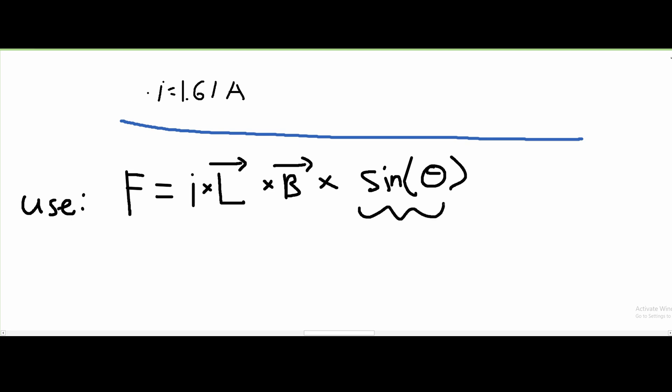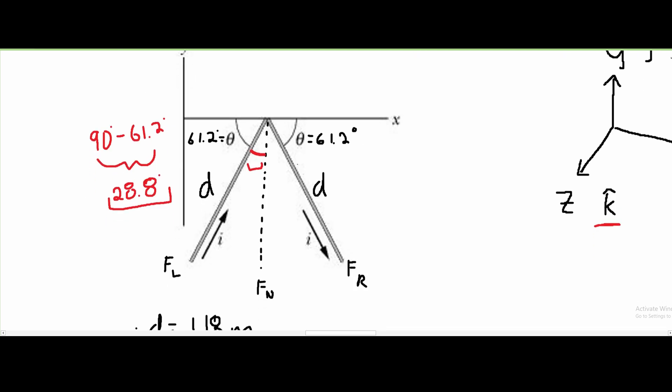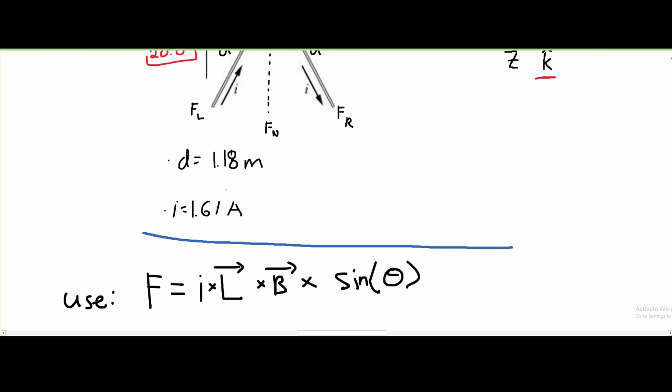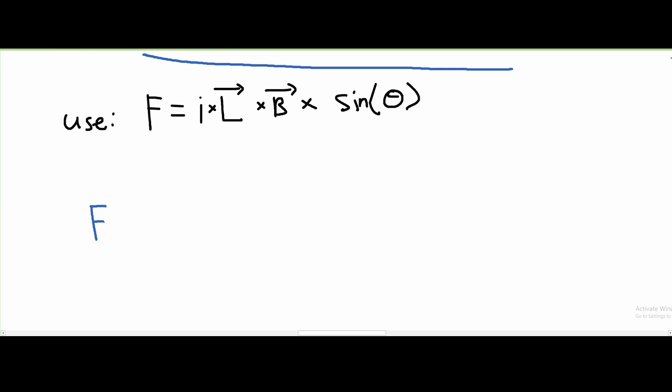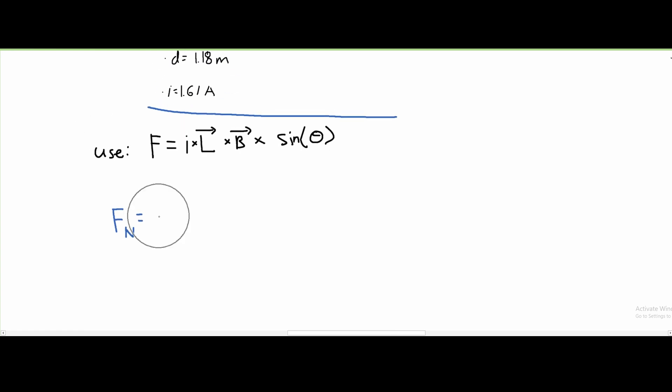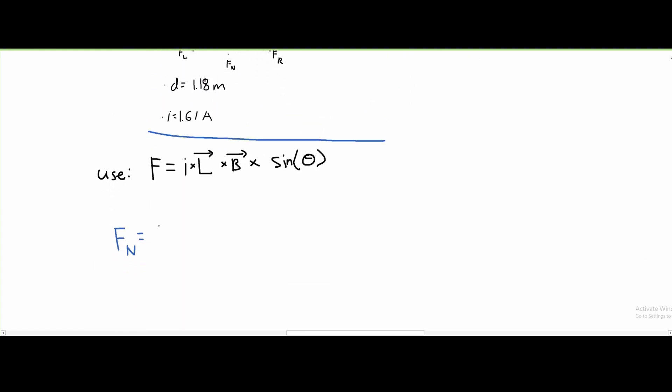We have two forces, and we need to find the net force. Our f_net equals the force on the left plus the force on the right.